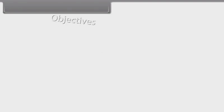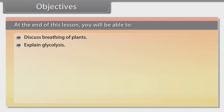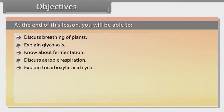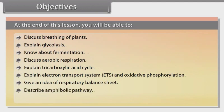Objectives: At the end of this lesson, you will be able to discuss breathing of plants, explain glycolysis, know about fermentation, discuss aerobic respiration, explain the tricarboxylic acid cycle, explain the electron transport system (ETS) and oxidative phosphorylation, give an idea of the respiratory balance sheet, describe the amphibolic pathway, and define respiratory quotient.